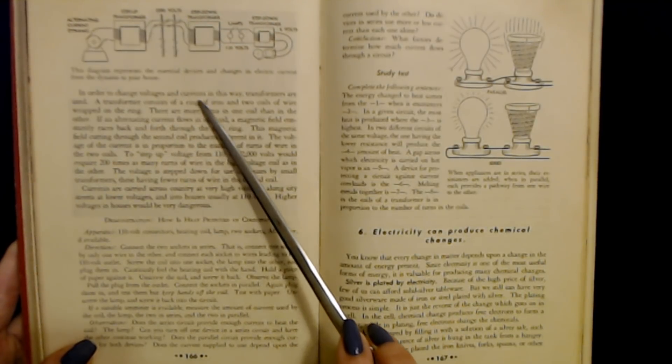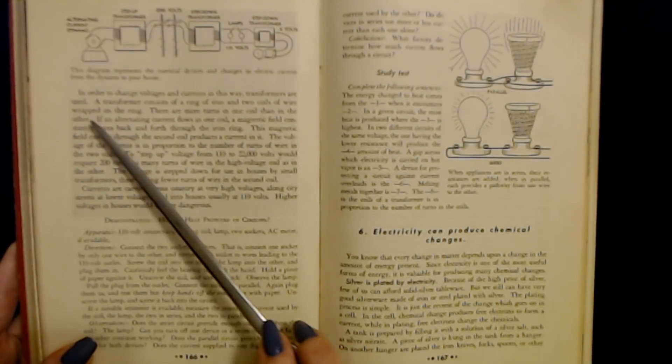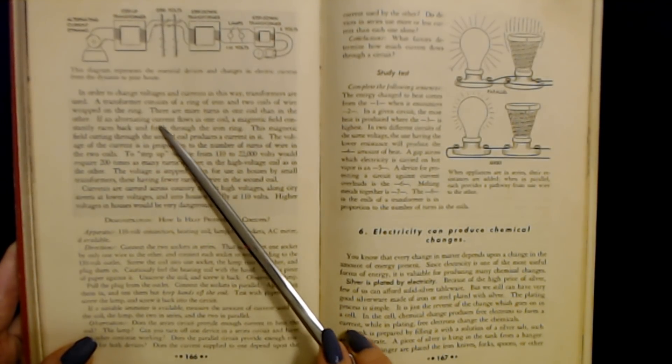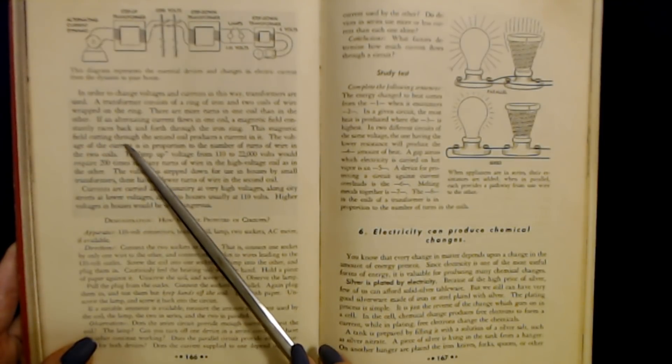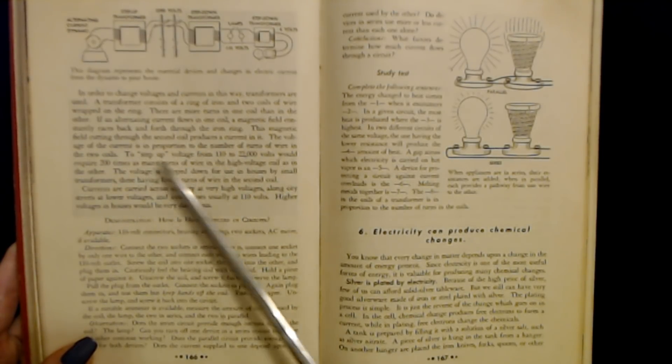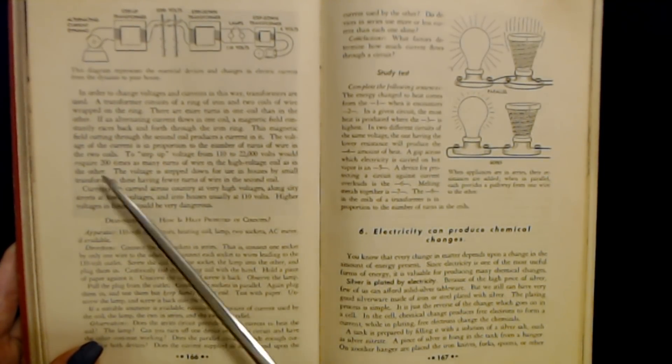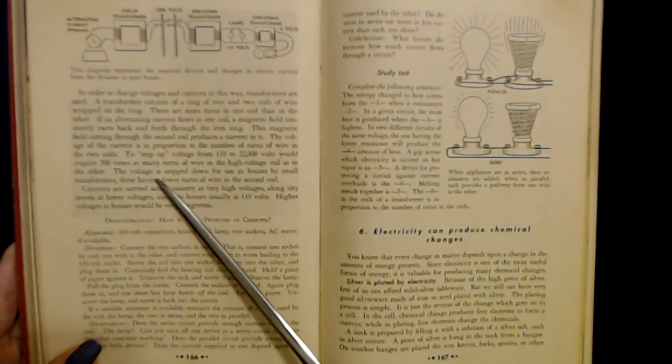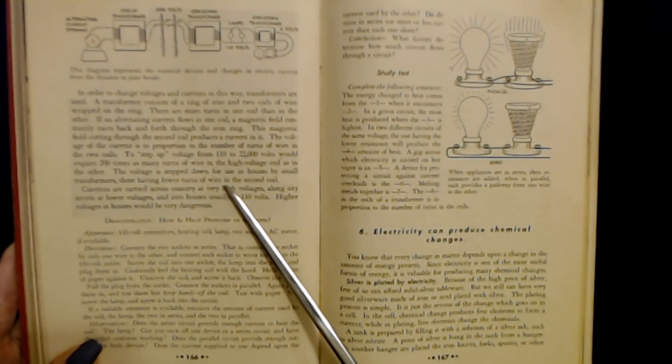In order to change voltages and currents in this way, transformers are used. A transformer consists of a ring of iron and two coils of wire wrapped on the ring. There are more turns in one coil than in the other. If an alternating current flows in one coil, a magnetic field constantly races back and forth through the iron ring. This magnetic field cutting through the second coil produces a current in it. The voltage of the current is in proportion to the number of turns of wire in the two coils. To step up voltage from 110 to 22,000 volts would require 200 times as many turns of wire in the high voltage coil as in the other. The voltage is stepped down for use in houses by small transformers, these having fewer turns of wire in the second coil.